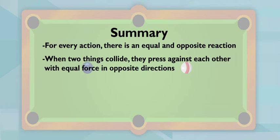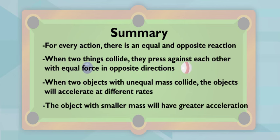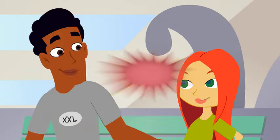That's why you and I both felt it when we bumped into each other. And when the objects have different mass, like we do, they'll also have different acceleration. The object with smaller mass, in this case me, will speed up or accelerate more. And she scores.